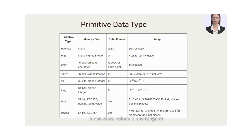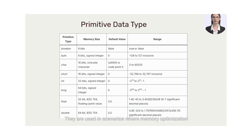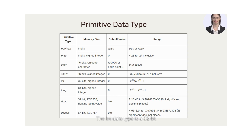The short data type is a 16-bit signed two's complement integer. It can store values in the range of -32,768 to 32,767. Shorts are used when a larger range of values than bytes is required but the memory footprint of an int is not justified. They are used in scenarios where memory optimization and a wider range of values are needed.